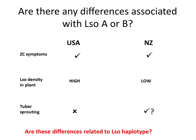In the past, we have heard different stories coming from the U.S. and New Zealand. In New Zealand they only have haplotype A, while in the U.S. we have both haplotypes A and B. The ZC symptoms are present in both. The density of the bacteria, as reported last year by Andrew Pittman, seems to be much higher in the U.S. than in New Zealand. And tuber sprouting has been very marginally reported in the U.S., whereas in New Zealand it's a real concern. So all these differences are related to the LSO haplotype.